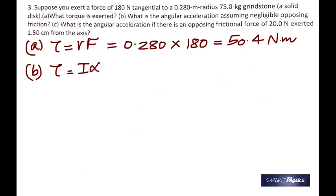Now for that, use the other equation for torque, which is I alpha. And since you already know tau is 50.4, you can rearrange this equation and calculate alpha.